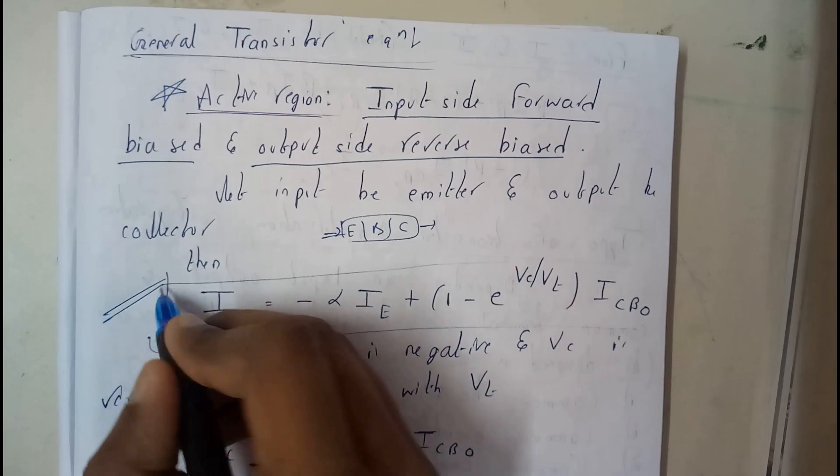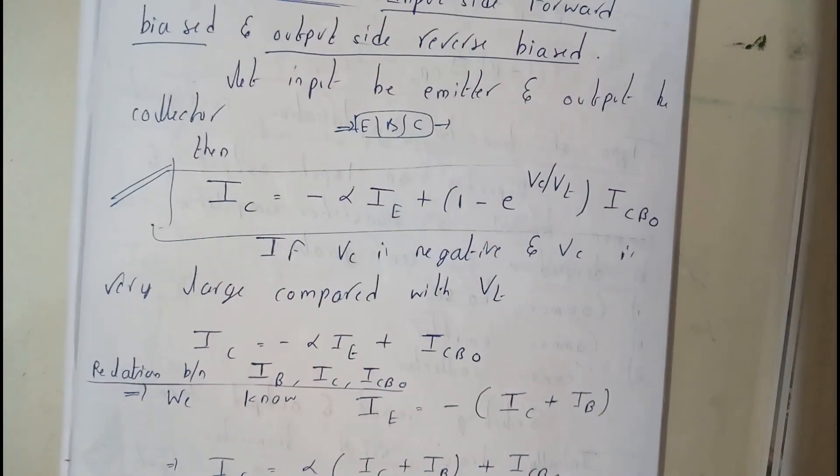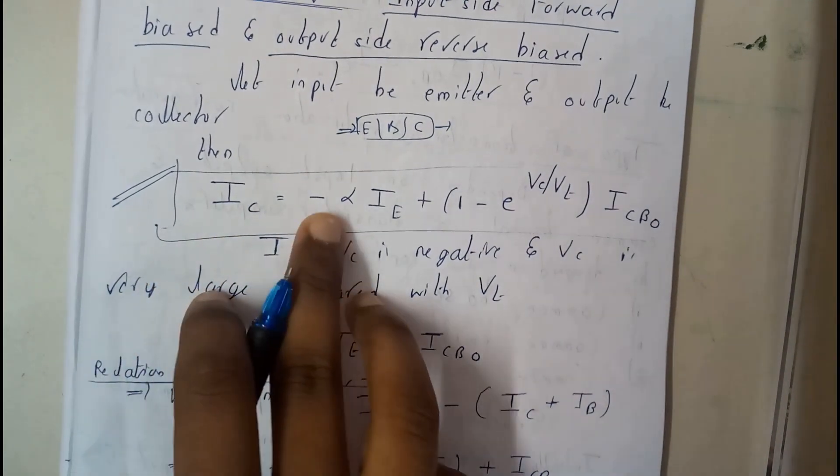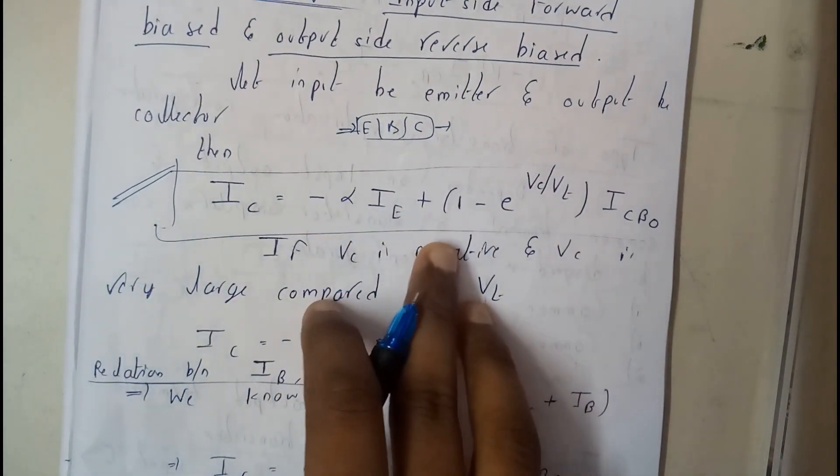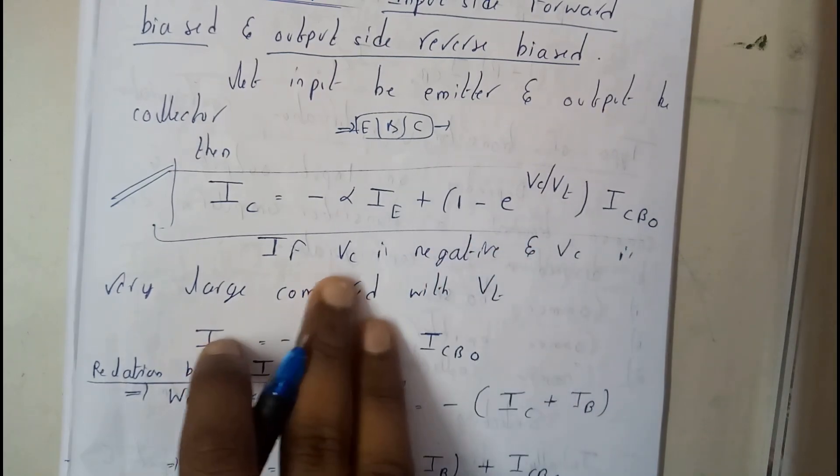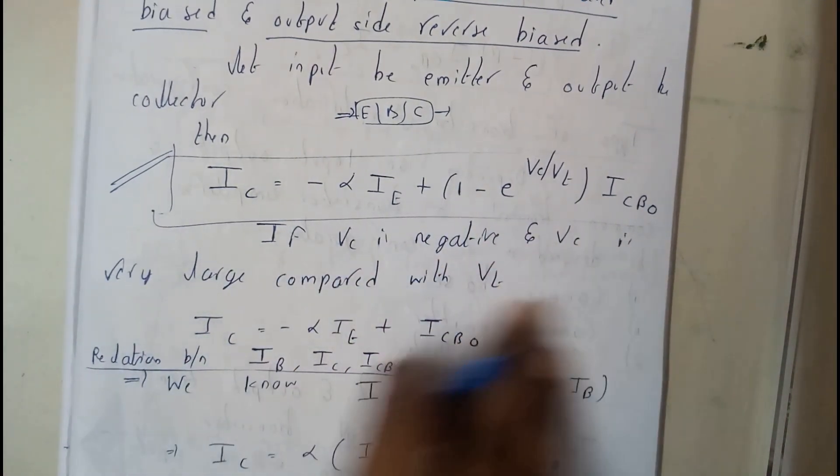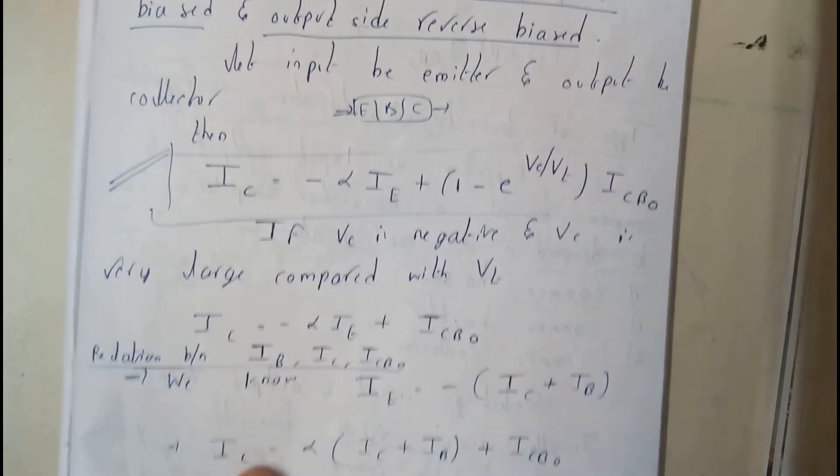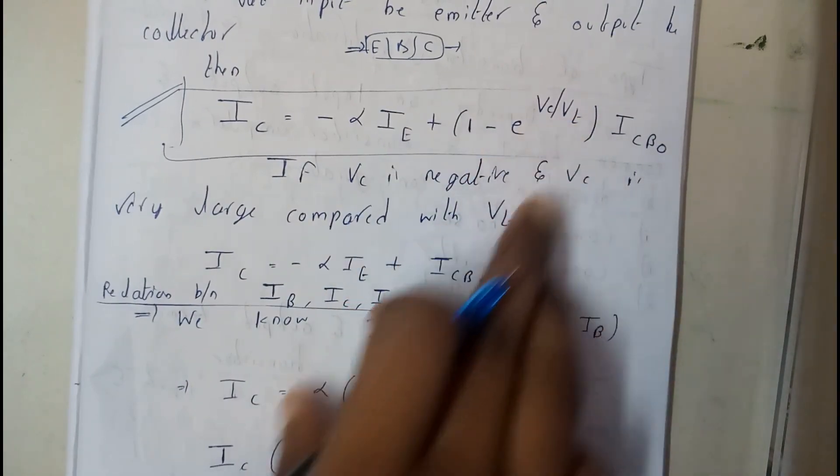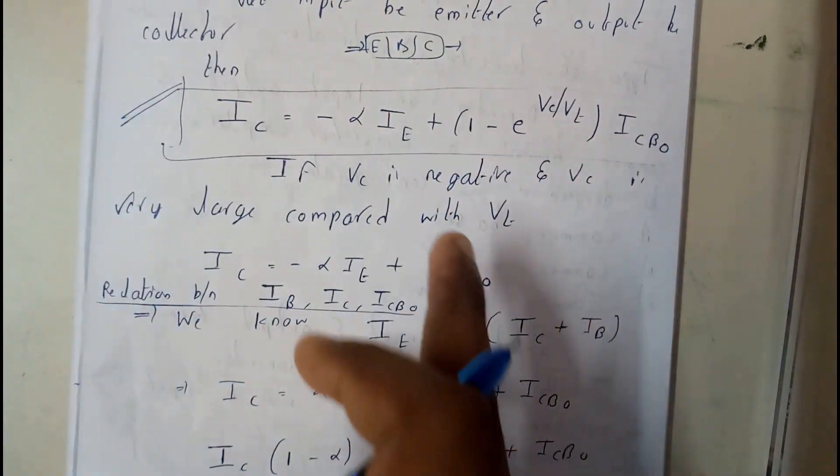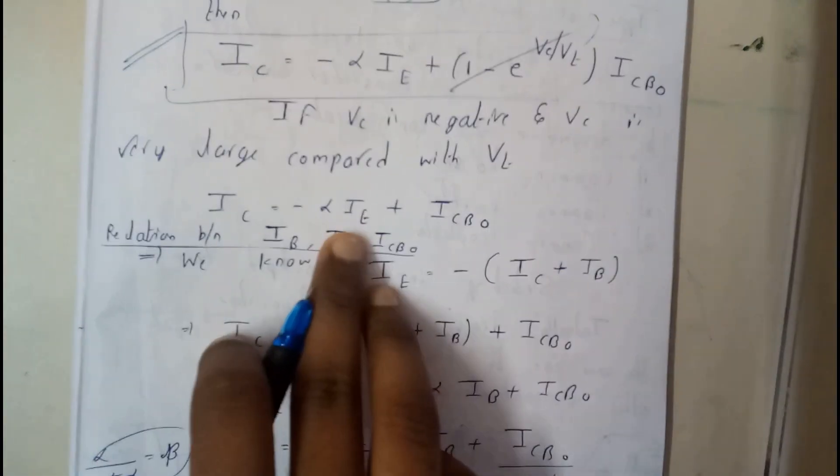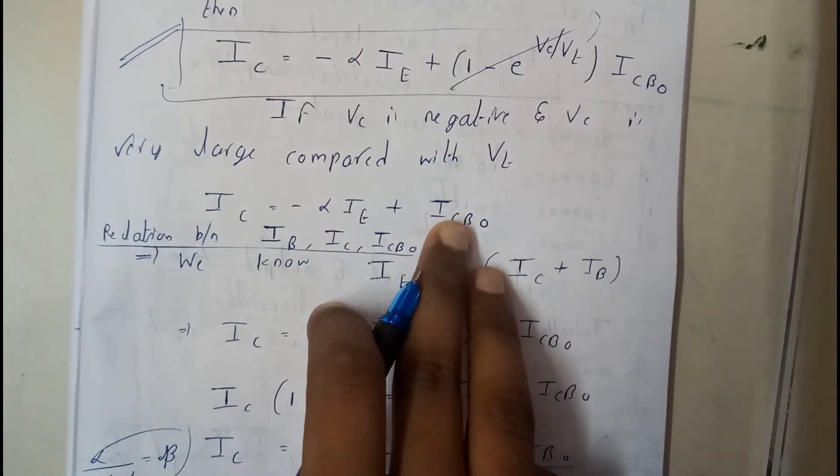So basically the generalized equation is this. This is done in a lengthy process. I have just skipped that because that's not so important according to me. So if you want you can learn it. Basically IC is equal to minus alpha IE plus 1 minus e to the VC by VT times ICBO. If VC is negative and VC is very large compared to VT, then e to the 0 gets cancelled and we can remove this whole term. So we get IC is equal to minus alpha IE plus ICBO.